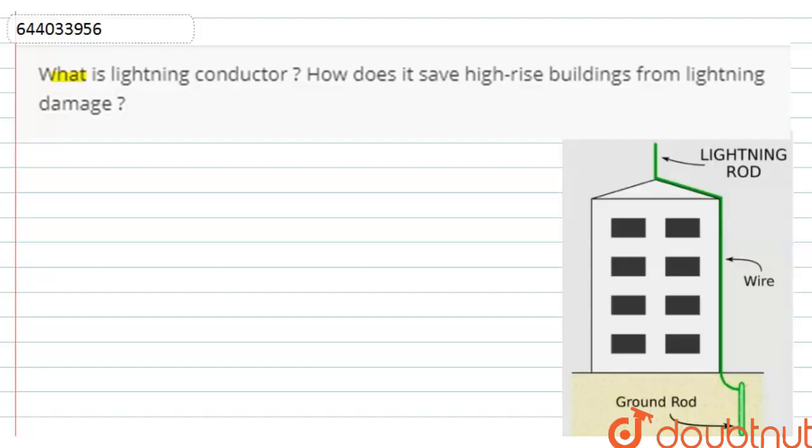The question is, what is a lightning conductor? How does it save high-rise buildings from lightning damage?